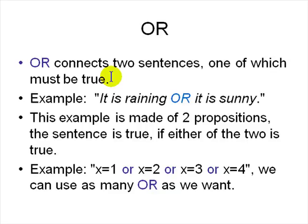So, or is the simplest of the connectors. It connects two sentences. At least one of which must be true. For example, it is raining or it is sunny. This whole thing is true if at least one of them is true. Either it's raining or sunny or both. The whole statement is true.